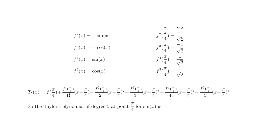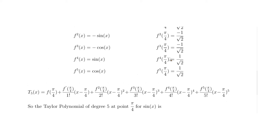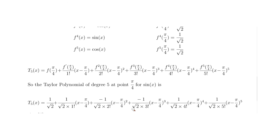Continuing the substitution: the third derivative gives −1/√2 divided by 3 factorial times (x − π/4) cubed. The fourth derivative gives 1/√2 divided by 4 factorial times (x − π/4) to the power of 4. The fifth term is 1/√2 divided by 5 factorial times (x − π/4) to the power of 5.